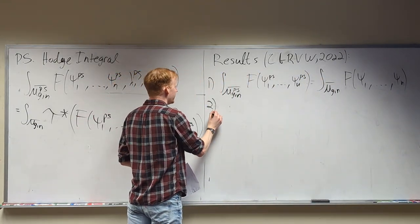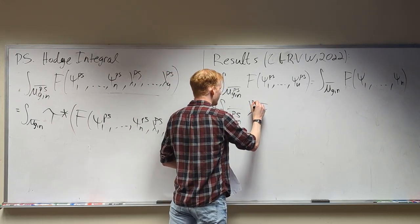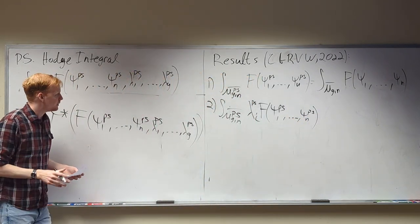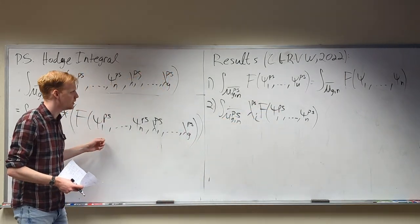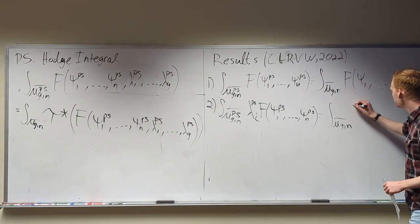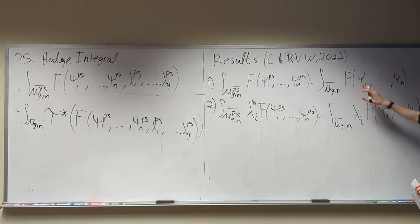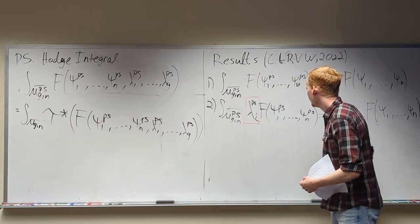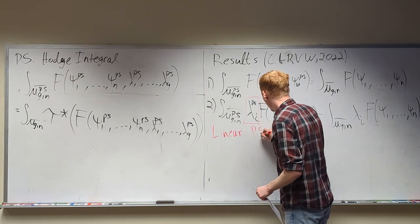What happens if we bring in just one lonely lambda class? Lambda_i times a polynomial of psi classes — this one is not as obvious. You pull back the psi classes and you still get stable psi classes; you pull back the lambda, you get the big monstrosity — the big sum. But that sum happens to simplify to get you exactly the stable counterpart. We call these linear pseudo-stable Hodge integrals because the lambda part is linear.